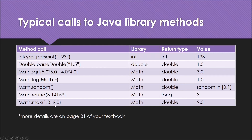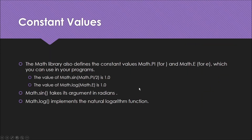If you want more details you can find them on page 31 of your textbook. The math library also defines constant values Math.PI and Math.E, which you can use in your programs. The value of Math.sin(Math.PI / 2) is 1 — because pi represents 180 degrees, dividing by 2 gives 90 degrees.